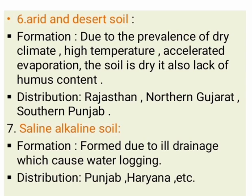Formation of Arid and Desert Soils: due to prevalence of the dry climate, high temperature and high evaporation, the soil is dry. Distribution of Arid and Desert Soils are Rajasthan, Northern Gujarat and Southern Punjab. Crops which are suitable for Arid and Desert Soils are Millets, Barley, Cotton, Maize and Pulses.